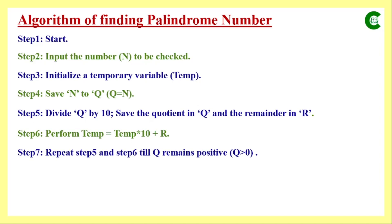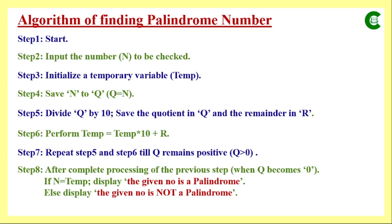Once q becomes 0, we stop the division and expression execution. We then check the final value of temp: if temp equals n, we conclude that the given number is a palindrome; otherwise, it is not a palindrome. Then we stop execution.